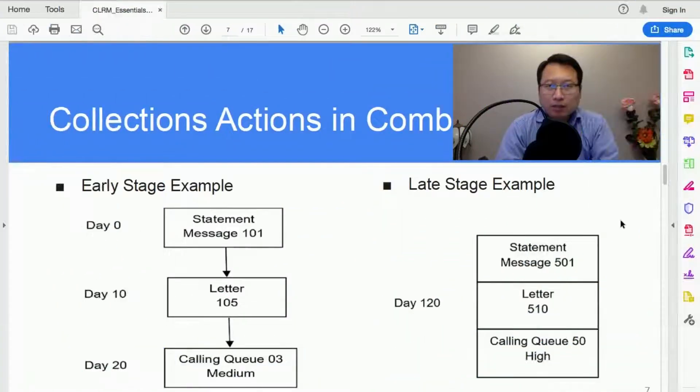On the left-hand side is an early stage example. Day zero represents the first day the account becomes delinquent.